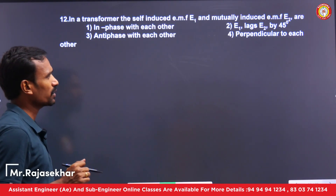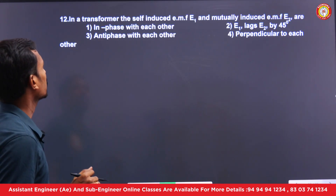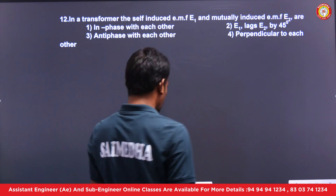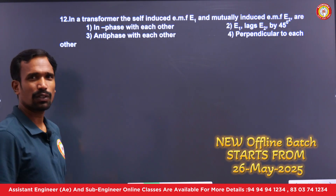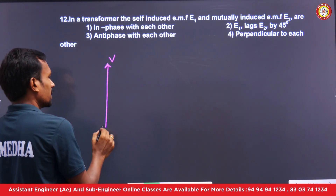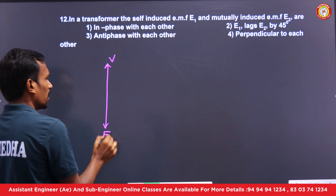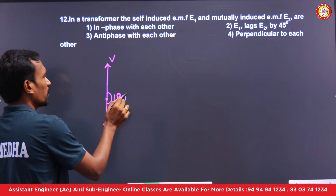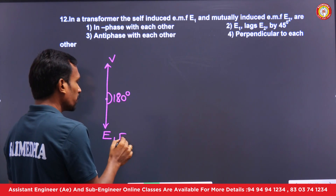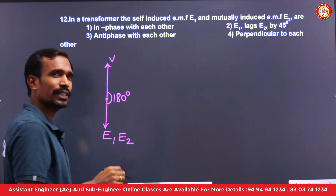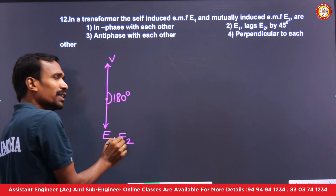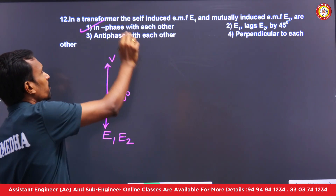Let's see a few more questions in this video. In a transformer, the self-induced EMF and mutual induced EMF — are E1 and E2 in phase or out of phase? Generally, a transformer is a phase-shifting device. The phase shift between supply voltage and induced voltage is 180 degrees, but the angle between V and E1 is 180 degrees and V and E2 is 180 degrees, so E1 and E2 are in phase to each other.